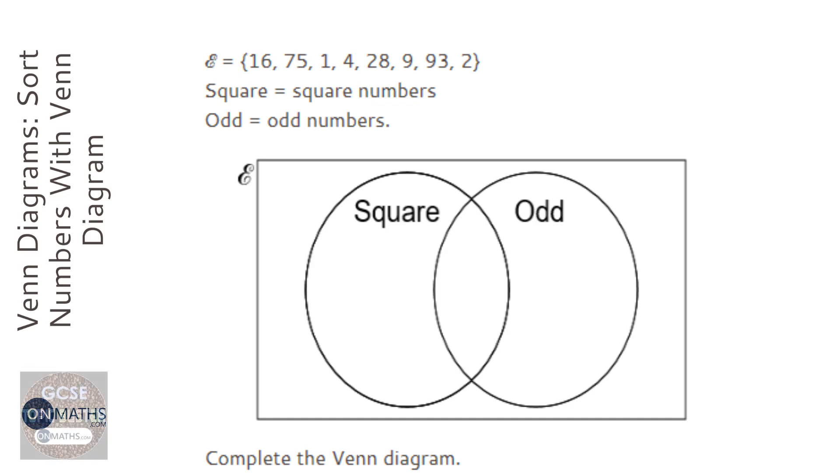So we're going to start off with 16. Now 16 is a square number, but it's not odd, so I'm going to leave that here. 75 is not a square number, but it is odd, so I'm going to put that there.